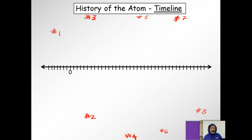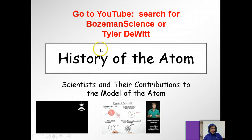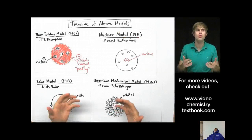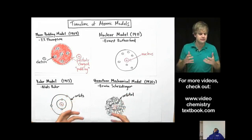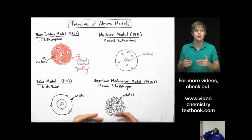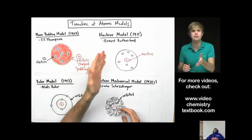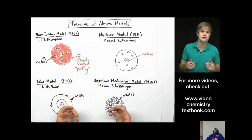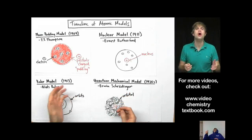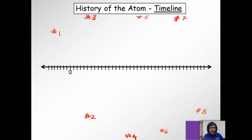Alright, so that was Mr. Anderson — really good stuff. He covers everything from biology to all sorts of stuff. Now here's Tyler DeWitt. As scientists have done experiments and learned more and more about atoms, they've changed the way they think about atoms. So in this video, we're going to look at a timeline of the different ways that scientists have pictured or imagined atoms over the years. Okay, so that was Tyler DeWitt — you've got to check him out sometime.